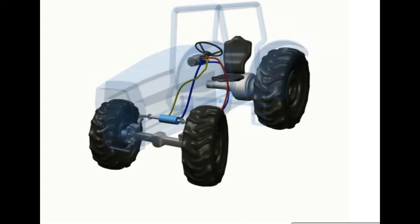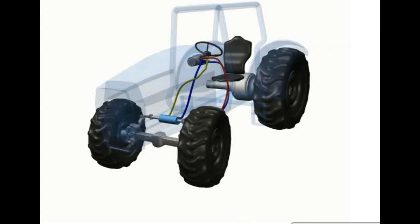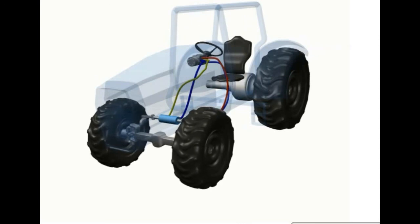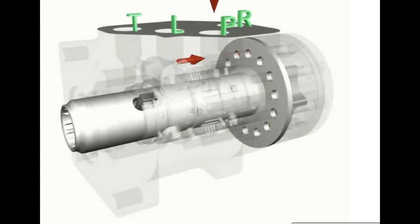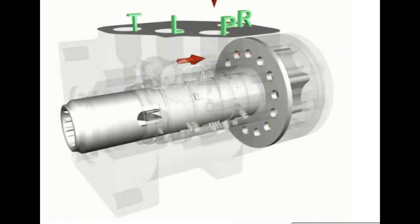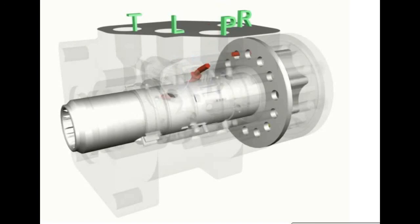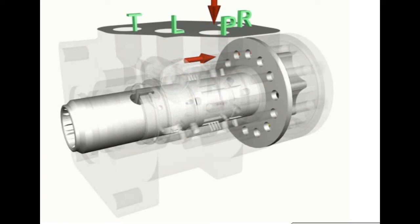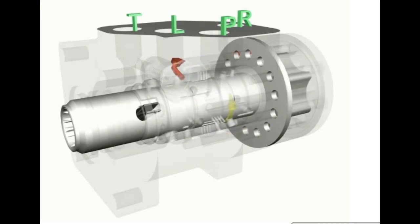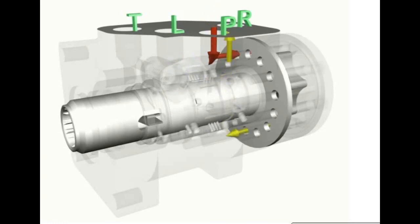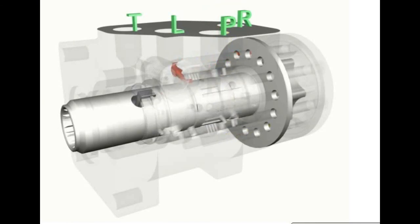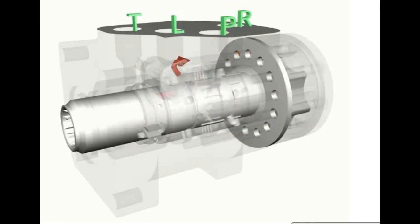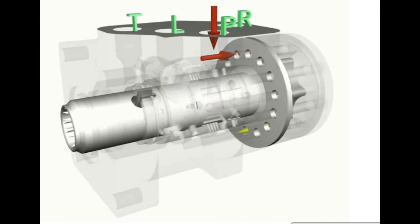Pump flow not used in the steering circuit passes through the tank port of the unit to the reservoir and to other downstream functions through the power beyond port of the unit, if provisions are made for this option.